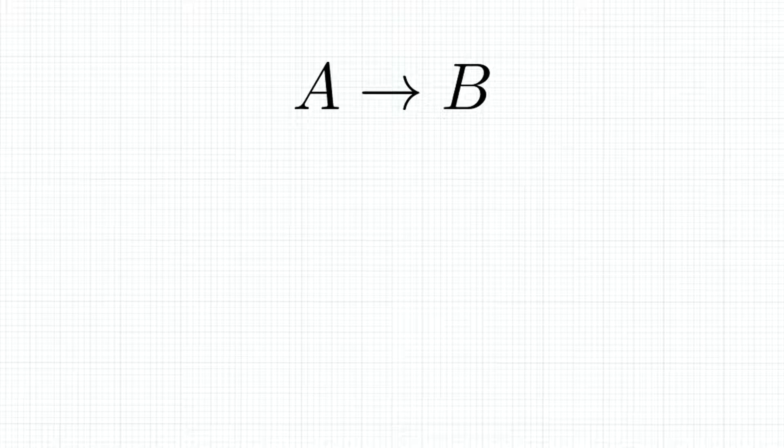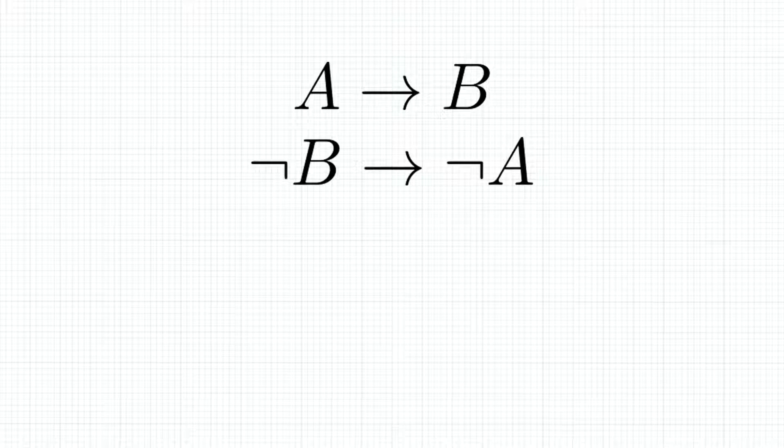We can take this statement and make a different but logically equivalent statement by taking its contraposition, which is if B is not true, denoted by this horizontal bar with a little downward section at the end, then A is not true. Now we have two logical statements, A leads to B and NOT B leads to NOT A.